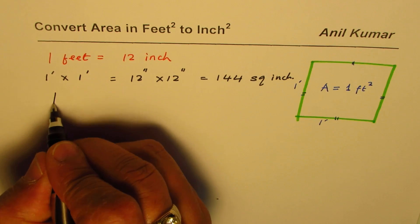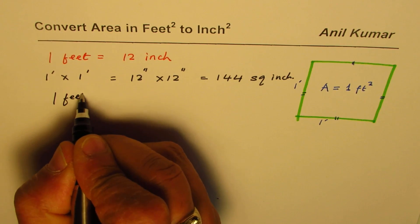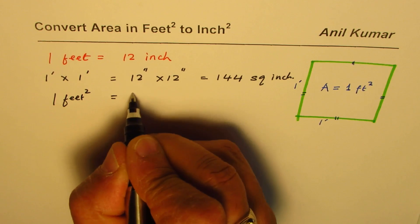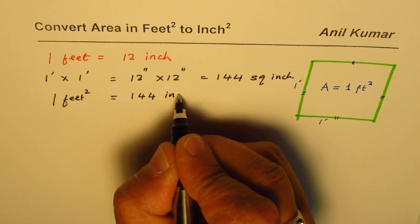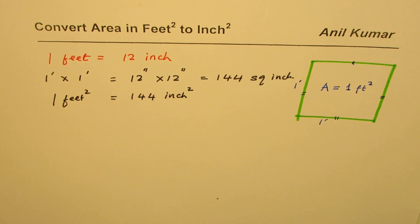So one square foot equals 144 square inches. That is the conversion factor.